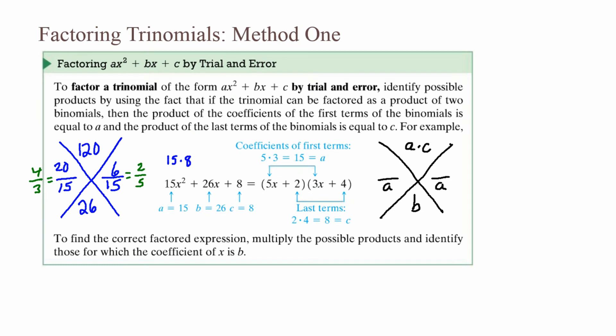When writing the parentheses, what's on the bottom goes in front of x and what's on top goes after the sign. So 2 over 5 means 5x plus 2. Then 4 thirds means 3 goes in front of x and 4 goes after the sign, giving 3x plus 4. So the final answer is (5x plus 2)(3x plus 4).